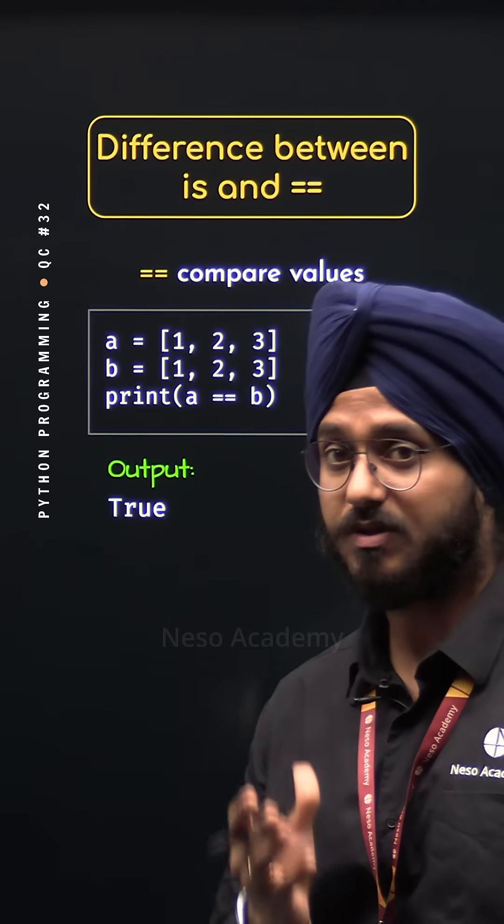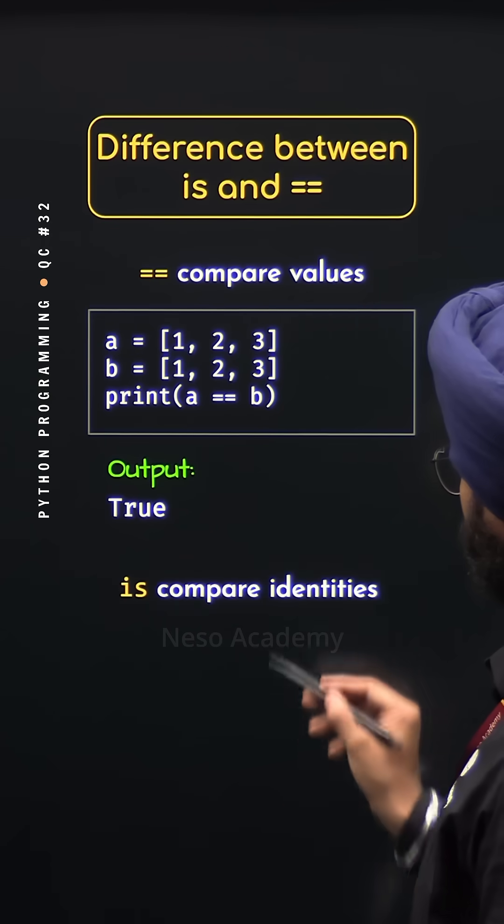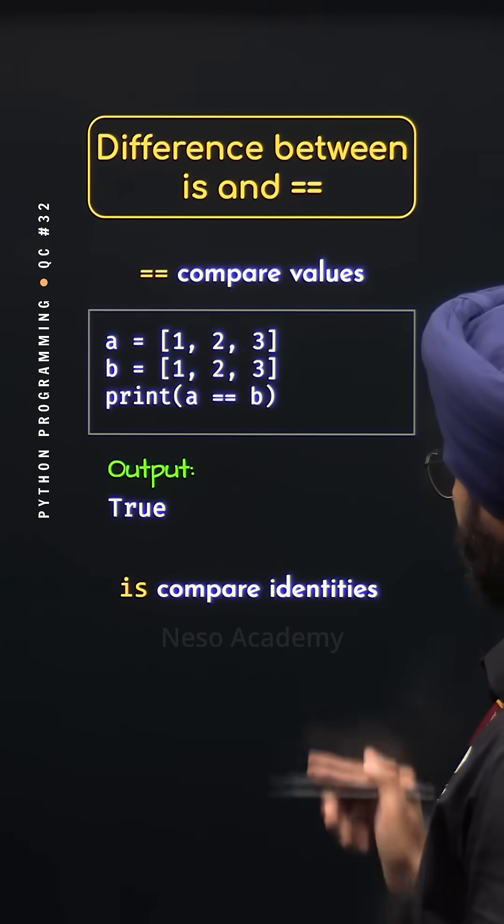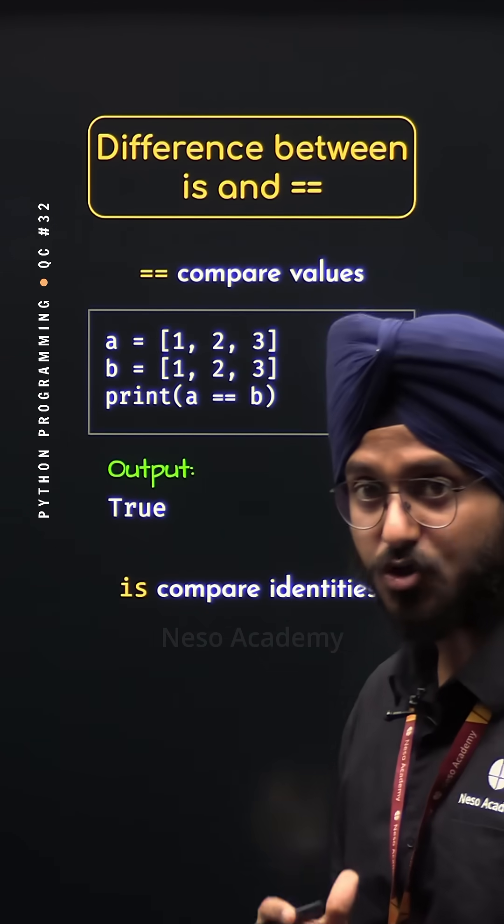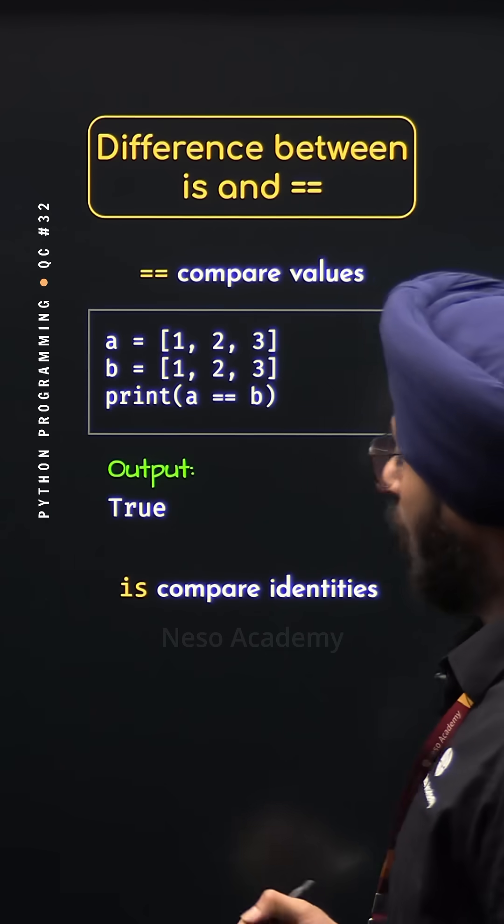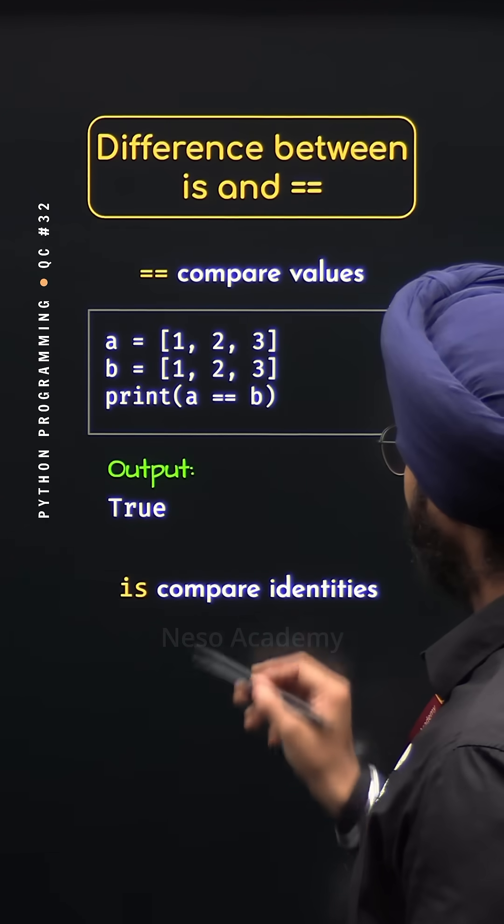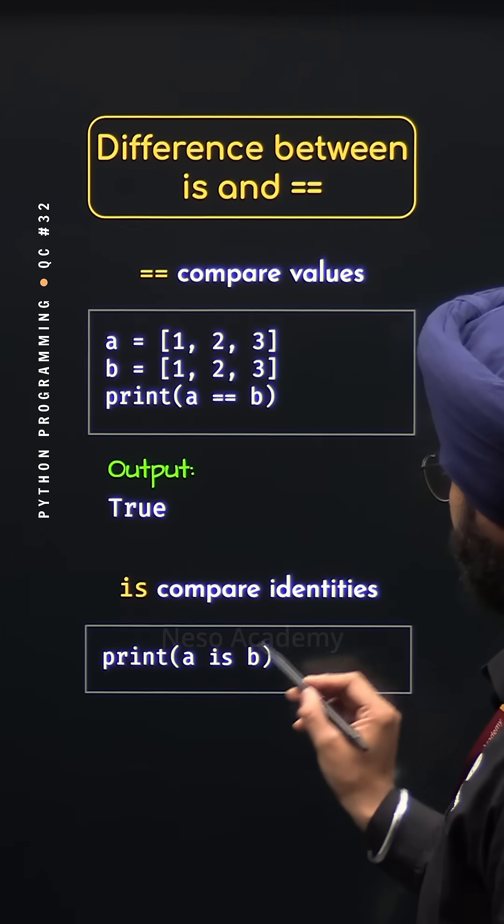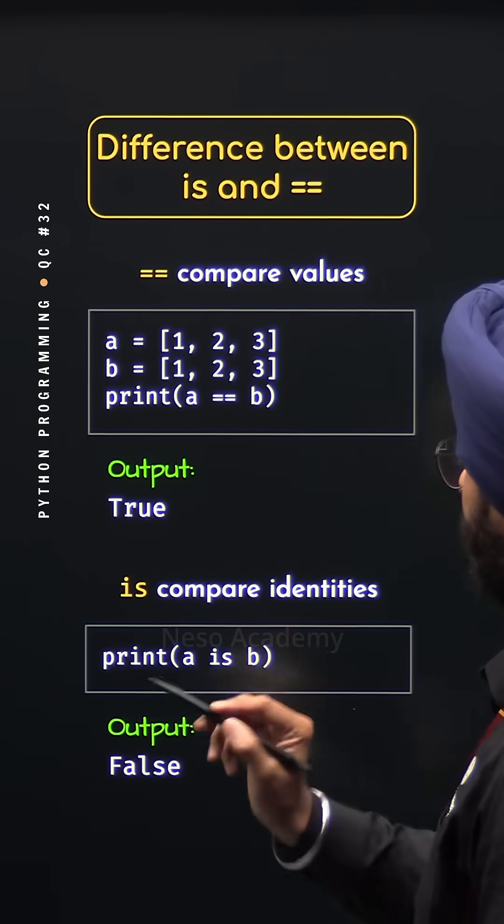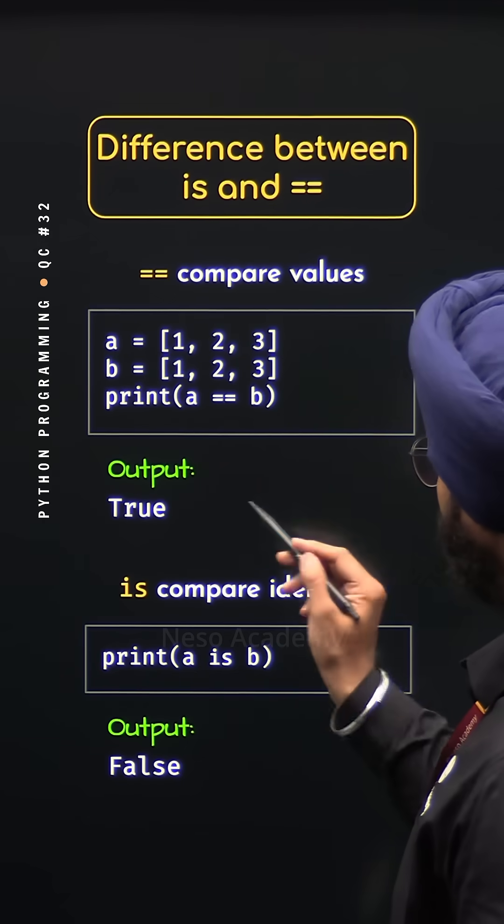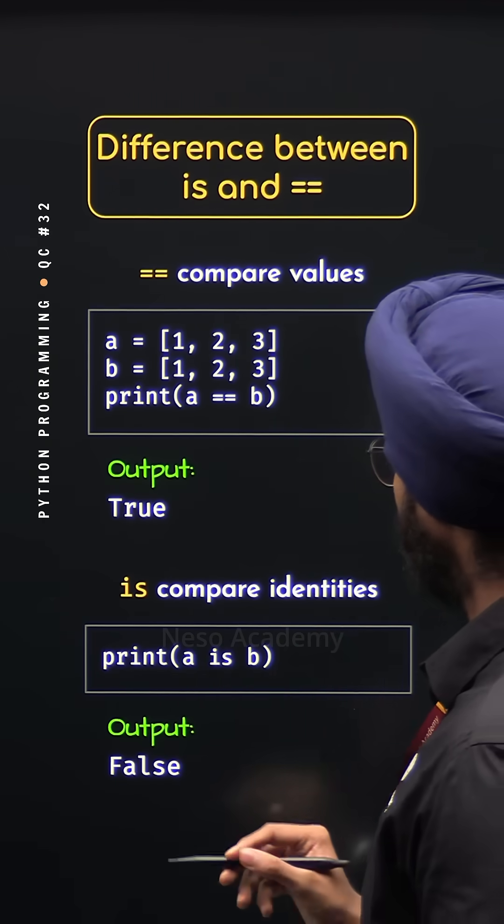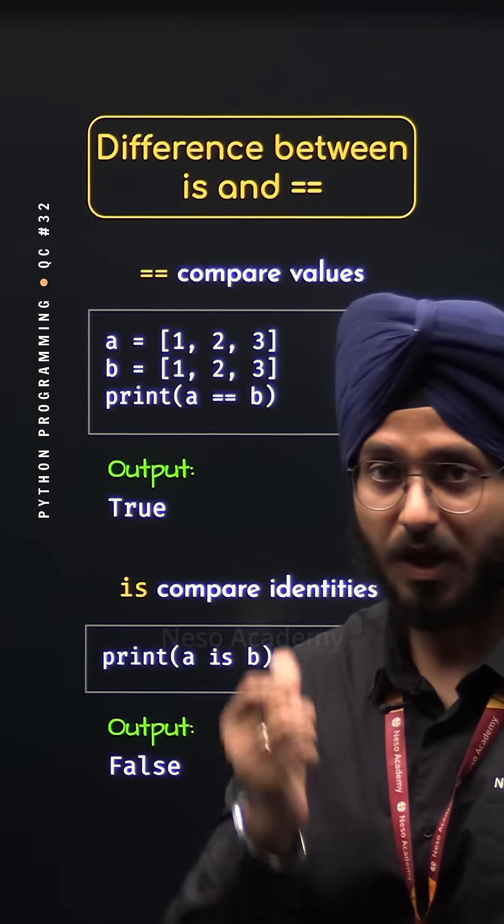But what happens in case of the is operator? The is operator is used to compare identities, that is, it is used to compare memory locations of the objects. Now, if we consider the same example and if we try to print the result of A is B, we will get false as the result. This is because although these lists have same values, they have different memory locations.